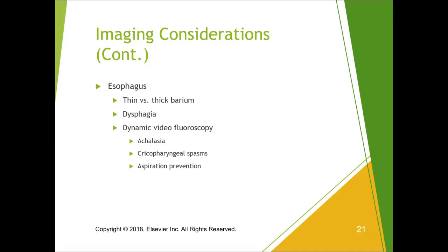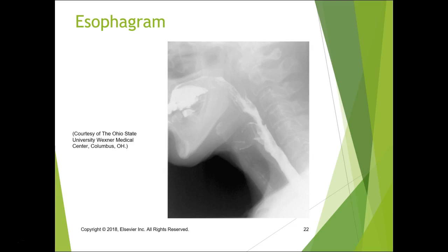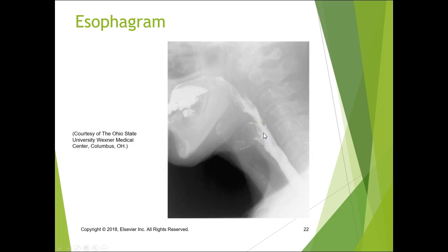For the esophagus, we use thick and thin barium. We do this for dysphagia and can do a dynamic video — a swallow function study under fluoroscopy. We look for achalasia, spasms, and aspiration, which is especially common after a stroke. The patient has barium in their mouth, swallows, and we look at the swallow mechanism to make sure it goes only through the esophagus. Here you can see trace penetration going into the trachea — you can see the cricoid rings — so this study is very good for detecting aspiration.